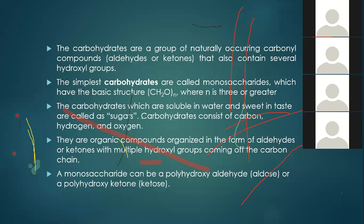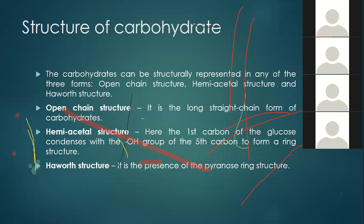What is the structure of carbohydrates? Carbohydrates can be structurally represented in three forms: open chain structure, hemiacetal structure, and Haworth structure. In the open chain structure, it is a long straight chain. In the hemiacetal structure, the first carbon of the monomer condenses with the hydroxy group of the fifth carbon to form a ring structure. For the Haworth structure, it is due to the presence of a pyranose ring — any cyclic isomer that has five carbons and one oxygen in a ring of six atoms.